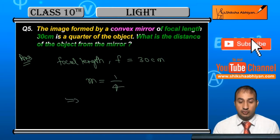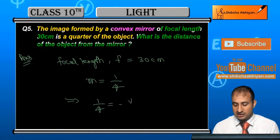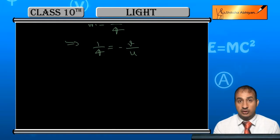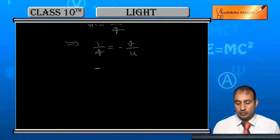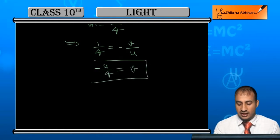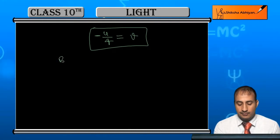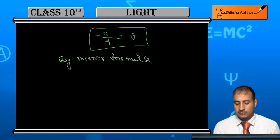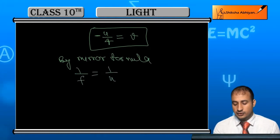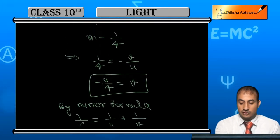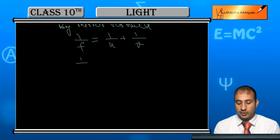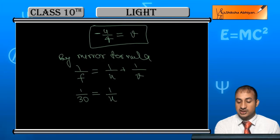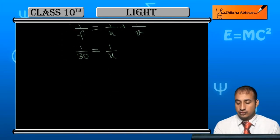This implies that M is equal to 1/4. This is the value for V. Now, by the mirror formula, 1/F is equal to 1/U plus 1/V.